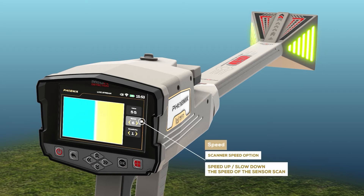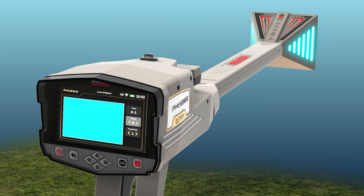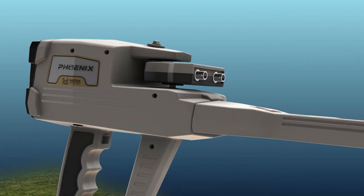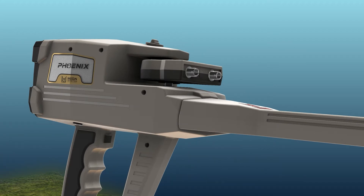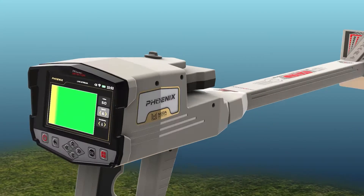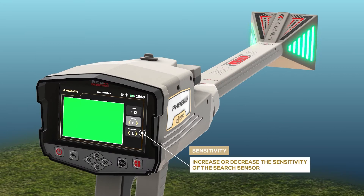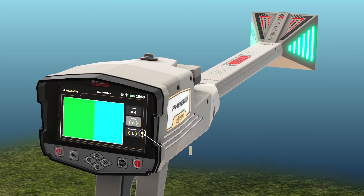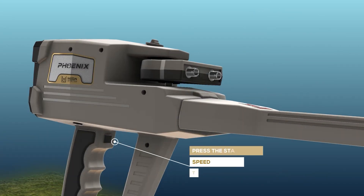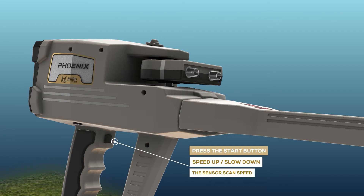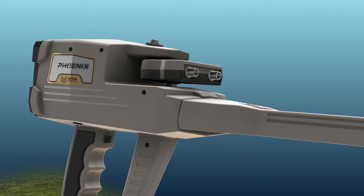Speed: Use the scanner speed option to speed up or slow down the speed of the sensor scan. Any change in the speed will ask the user to press the Start button to apply the new changes. Sensitivity: Use the sensitivity option to increase or decrease the sensitivity of the search sensor. Any change in sensitivity will ask the user to press the Start button to apply the new options.